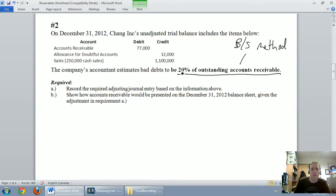Well, again, if they give you this number, 20% of outstanding accounts receivable, we should figure out what that is. 20% times our accounts receivable, $77,000, is $15,400.